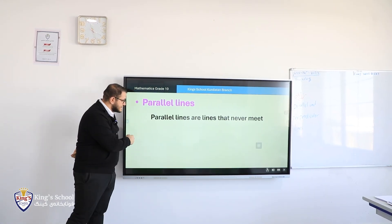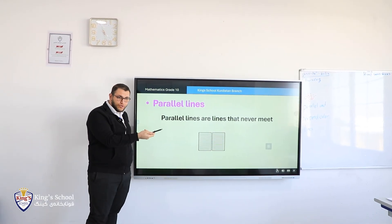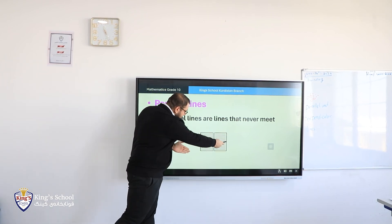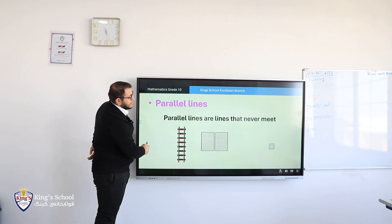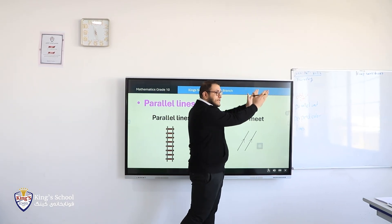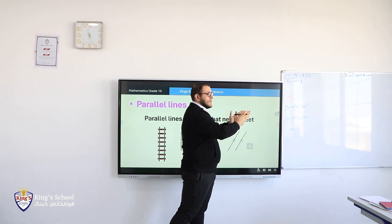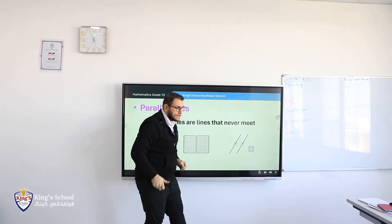Let me show you some examples in real life. For example, a book - this side with this side are parallel. Railway, for example. The other one, we have a line. They, let's say, go to the same direction without intersecting.